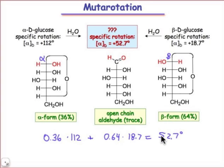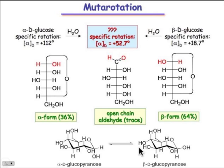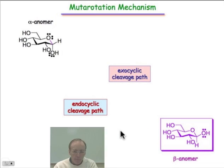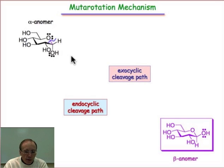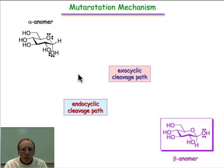We want to look at the mechanism in three dimensions. What's going on here is we've interconverted the anomeric hydroxyl group in the axial α position into the β position, and it's going to involve the open chain form. This can either involve the cleavage of the bond within the ring — that's the endocyclic cleavage pathway — or it could involve cleavage of the hydroxyl group carbon-oxygen bond on the outside of the ring, which is the exocyclic pathway. In both cases, the key intermediate is known as the oxocarbenium ion intermediate.